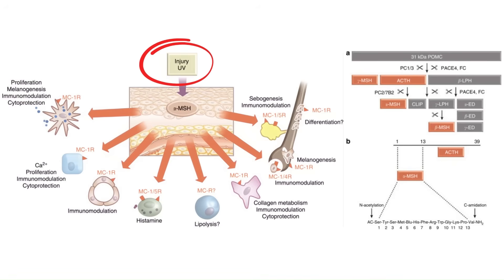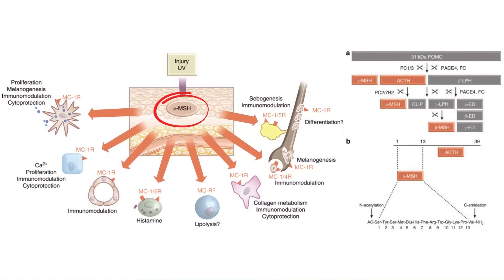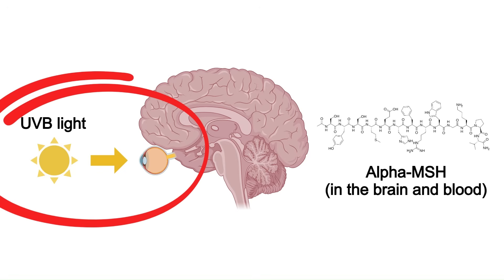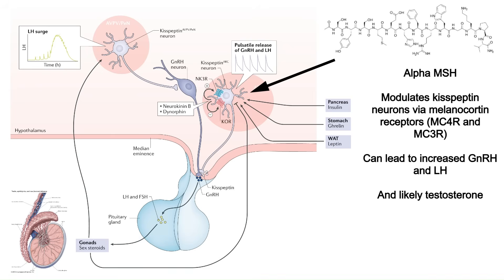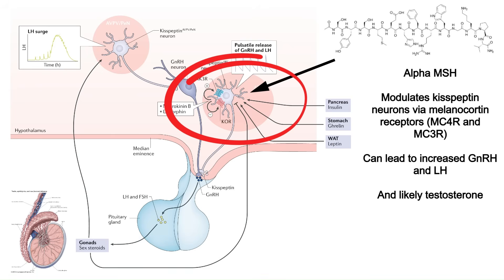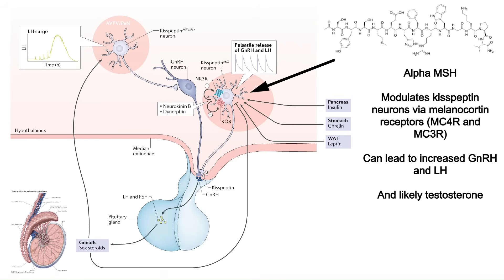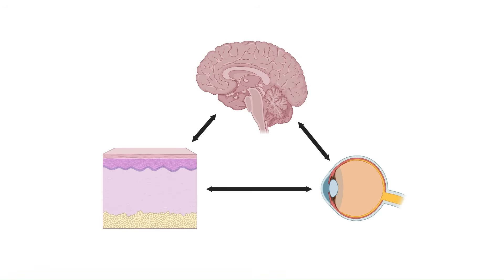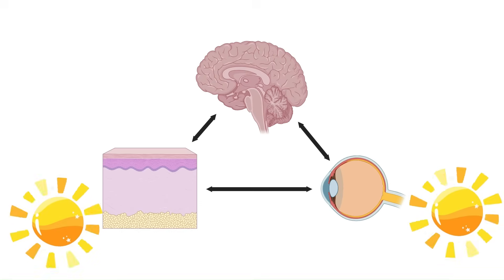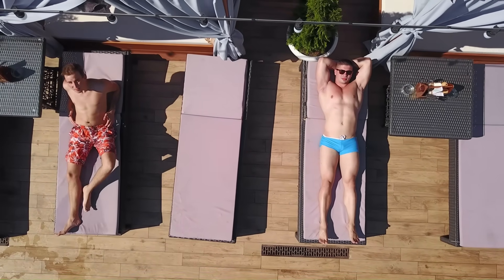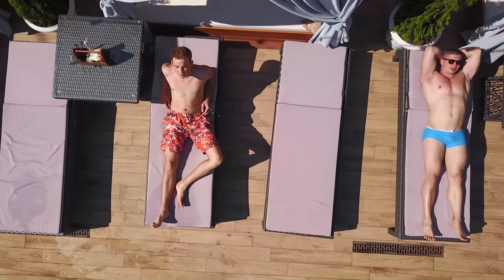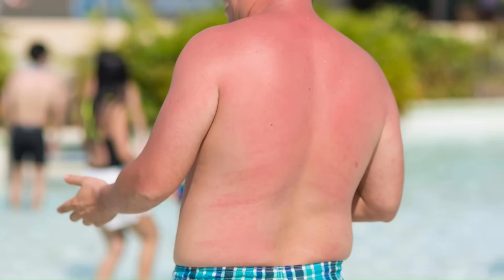When your skin is exposed to UVB light — which is midday sunlight — melanocytes in the skin produce a peptide called POMC, which is cleaved into alpha-MSH. In the skin, alpha-MSH stimulates melanin production to darken the skin. Alpha-MSH is also produced in the brain when UVB light enters the eyes, and there's evidence that UVB on the skin can increase alpha-MSH in the brain as well. In the brain, alpha-MSH can stimulate kisspeptin neurons and therefore affect the whole reproductive axis including testosterone.